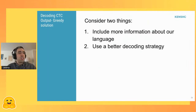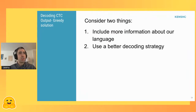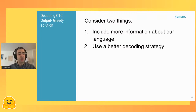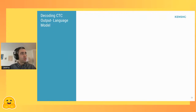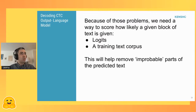There are two things to consider. First, we know a lot of information about human language — can we inject information about language into our decoding to guide it to give us more natural-sounding output? And is there a way to use a better decoding strategy than this greedy solution? First I'll talk about language models and how we can inject language information into our output.